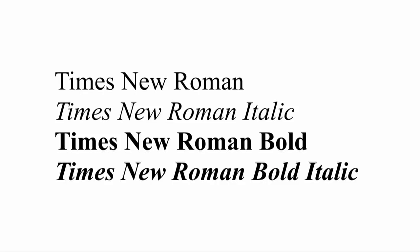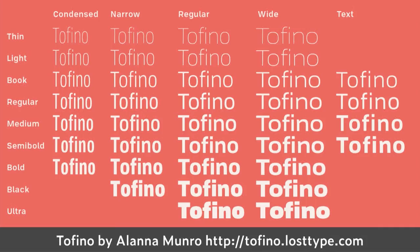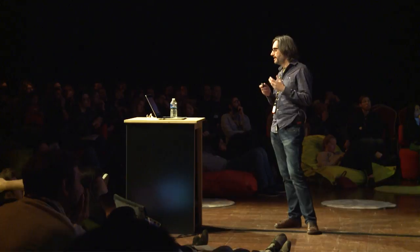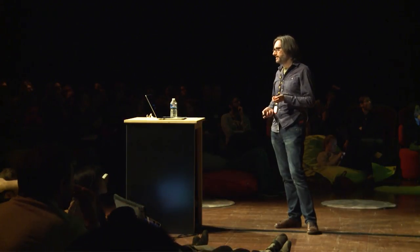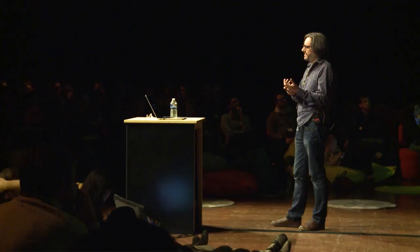Before I talk about that, I want to go back and talk about the type family. What is a type family? A simple one has roman, italic, bold, and bold italic. More often though, the really interesting type foundries are releasing things like Tofino — a new family with 74 fonts. If you buy into this family, you've got a really big palette of stuff to choose from.